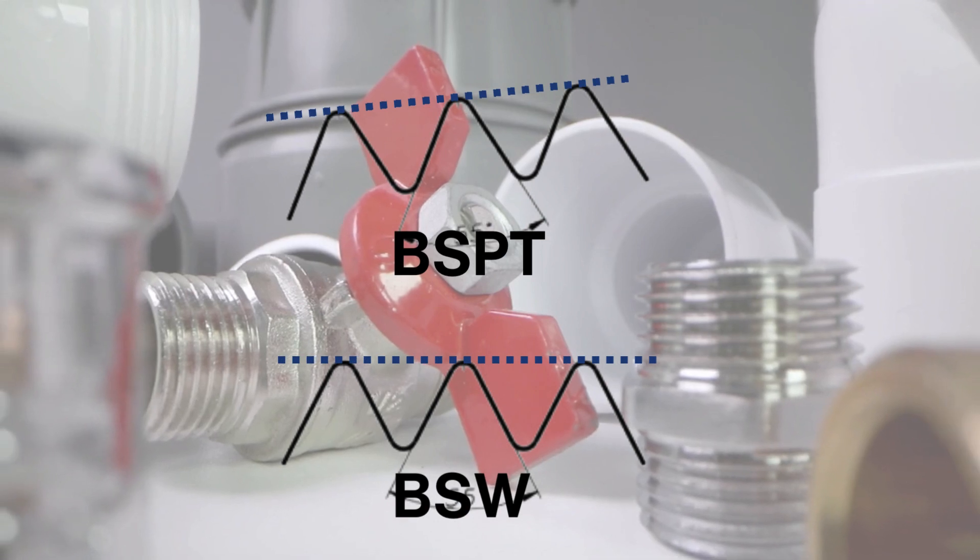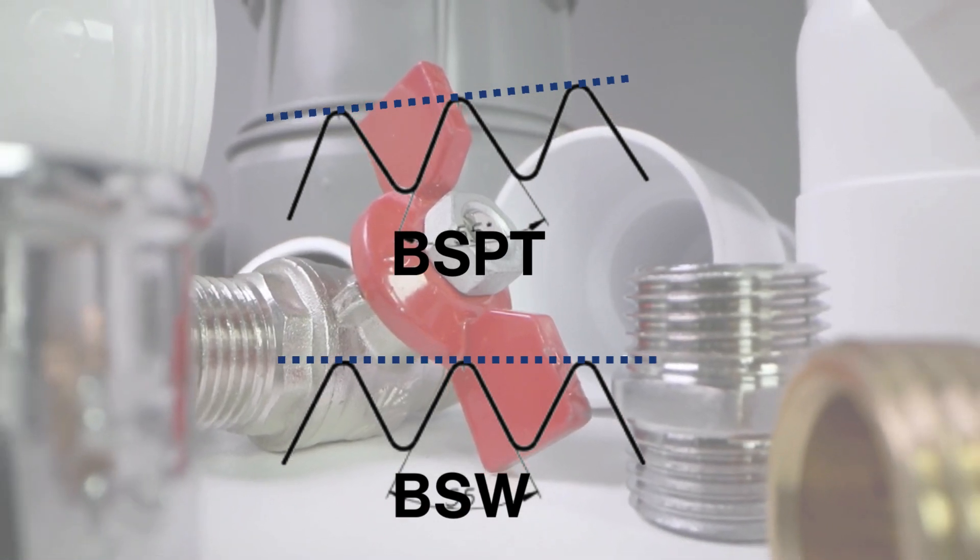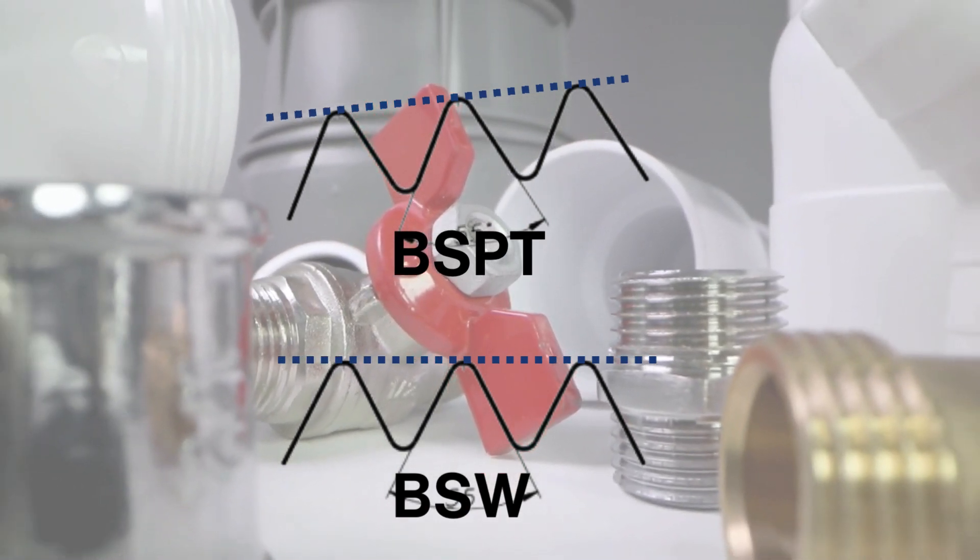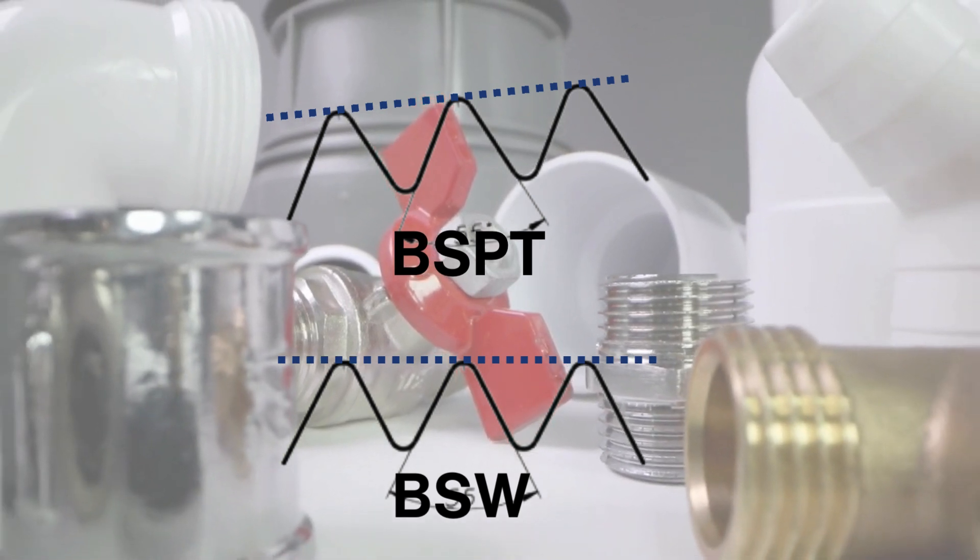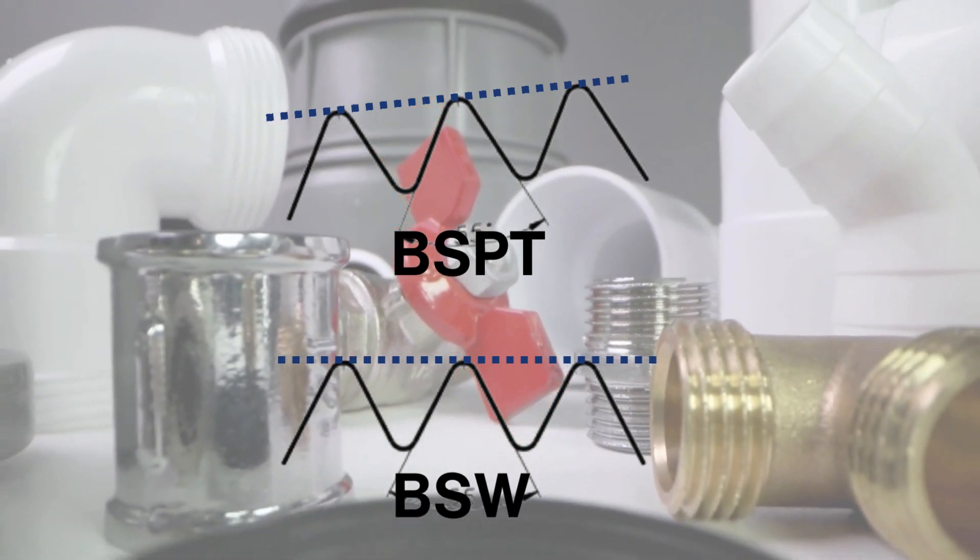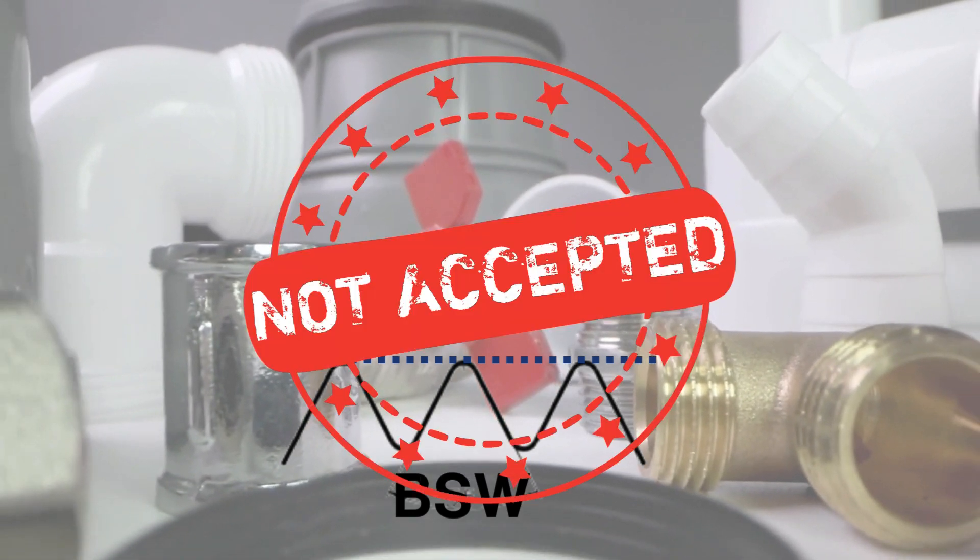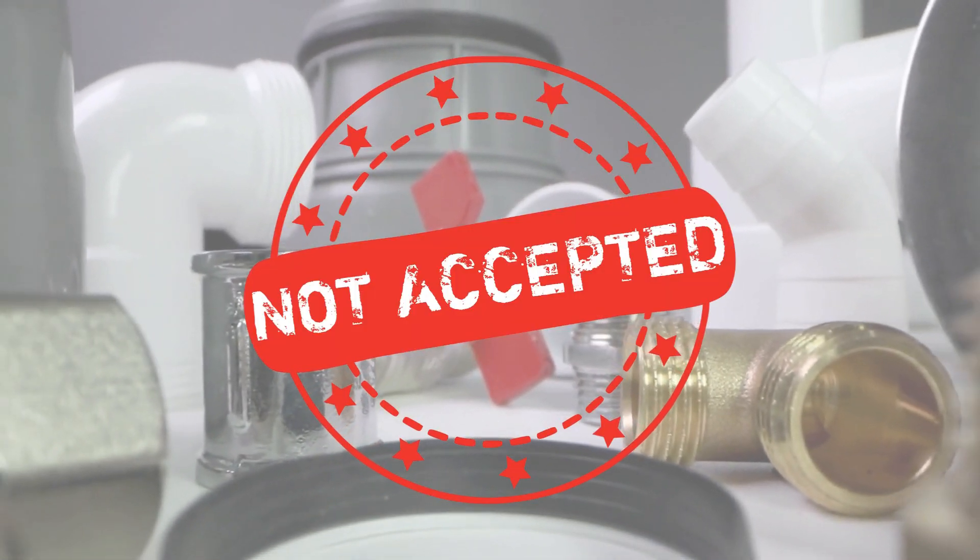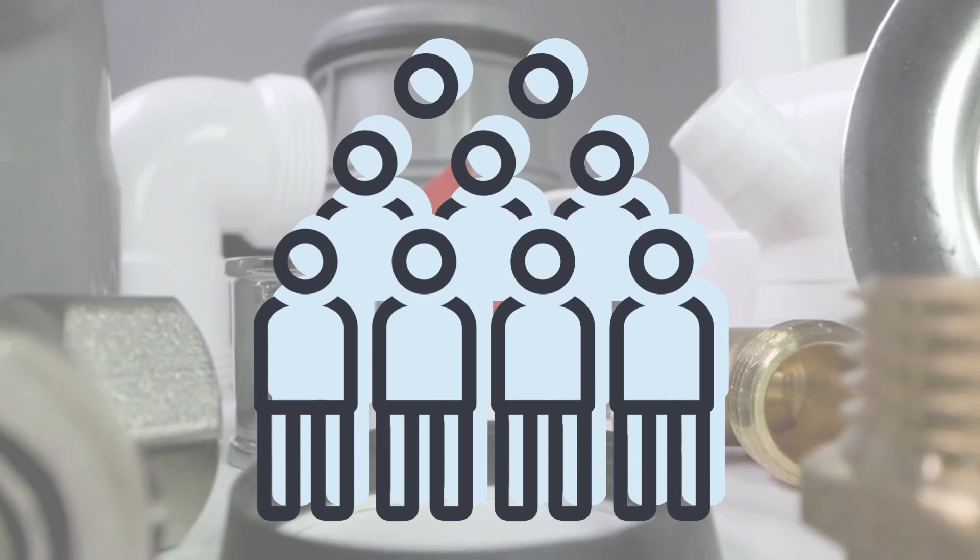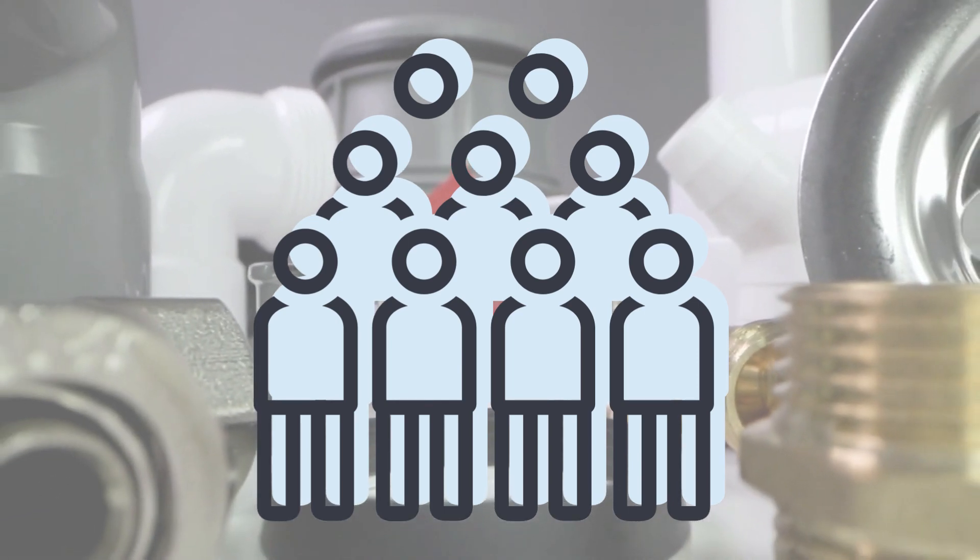The BSP thread is a tapered version of the parallel Whitworth thread. Even though, up through the 1860s, this standard was often used in the United States and Canada, it was not universally accepted.